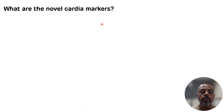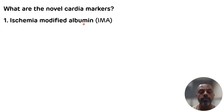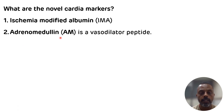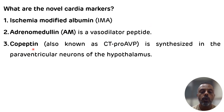Another question: what are the novel cardiac markers? Novel means new. The three novel cardiac biomarkers are: first, ischemia modified albumin; second, adrenomedullin, which is basically a vasodilator peptide; and third, copeptin, which is synthesized in the paraventricular neurons of the hypothalamus.